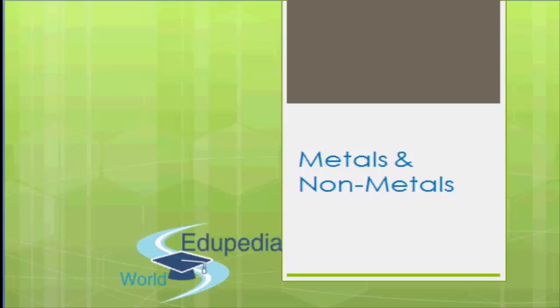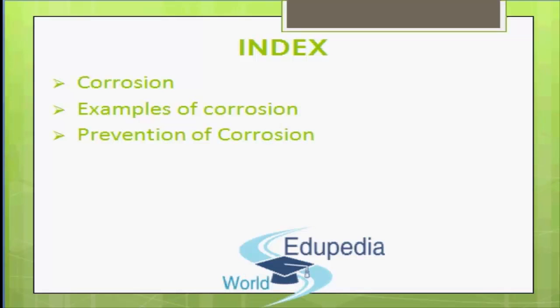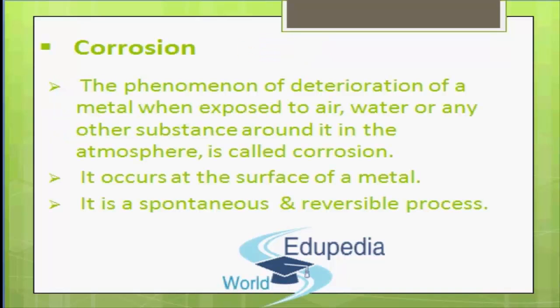Hello everyone, welcome to Edupedia World videos. Today we will discuss corrosion, examples of corrosion, and prevention of corrosion. Corrosion is the phenomenon of deterioration or destruction of a metal when exposed to air, water, or any other substance in the atmosphere. It occurs at the surface of a metal.